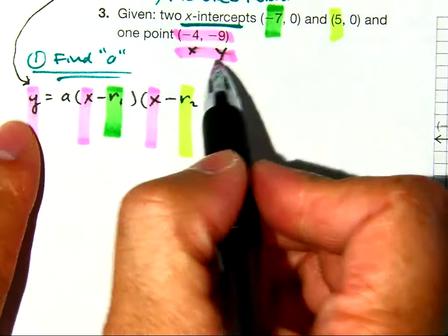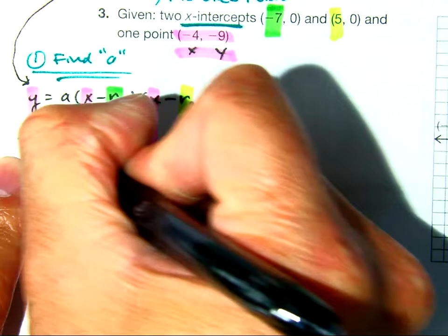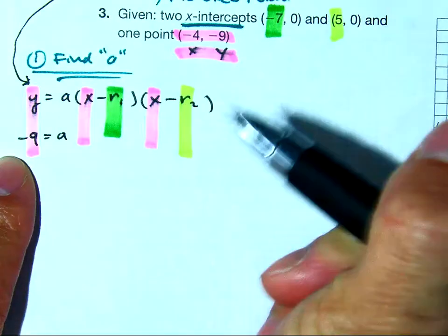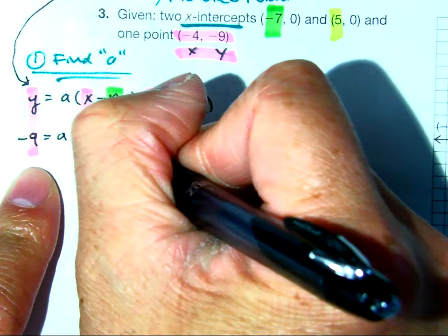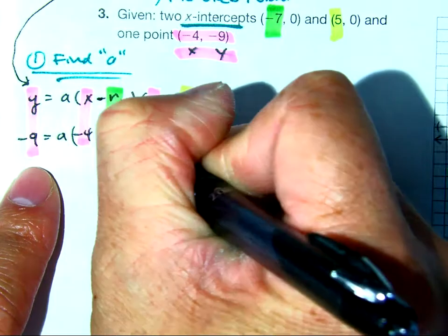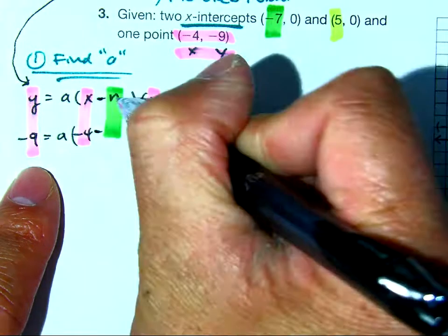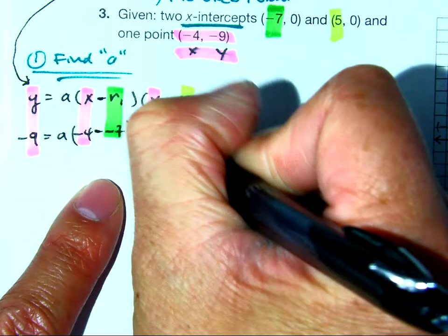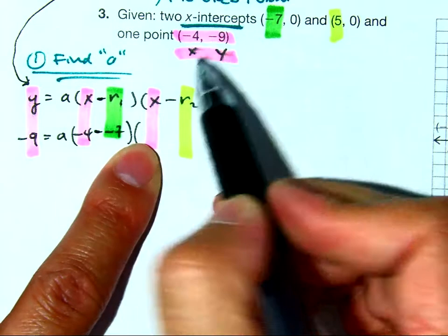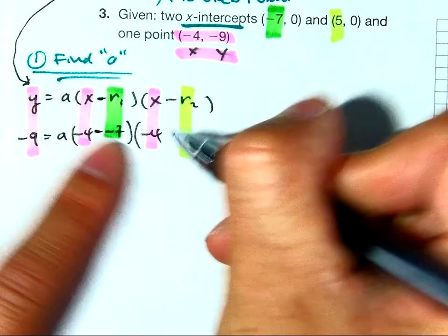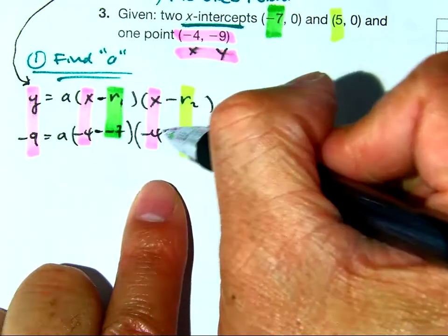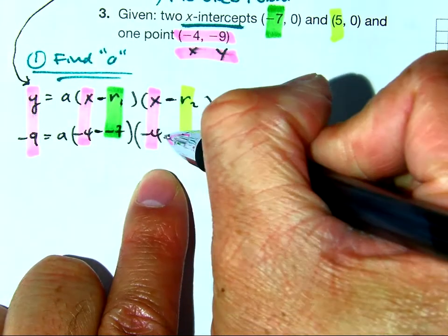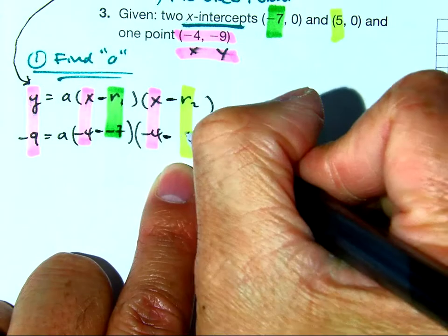So, my y value is -9, my a value I'm trying to solve for, my x value is -4. This minus sign comes down regardless of what my r1 value. My r1 value is -7. My x value is -4. So, you're actually using multiple x values here. The minus sign. And then my r2 value is 5.